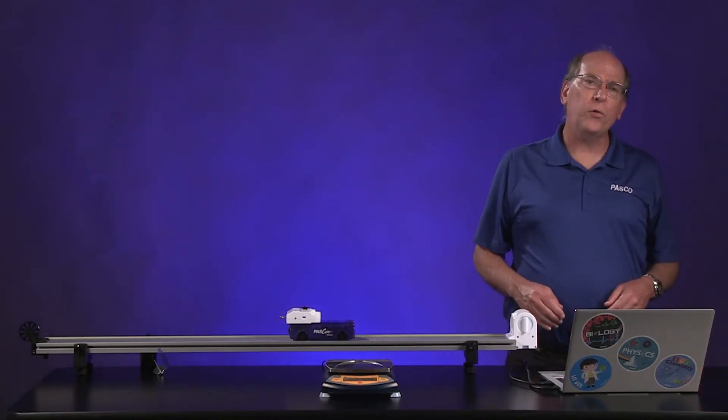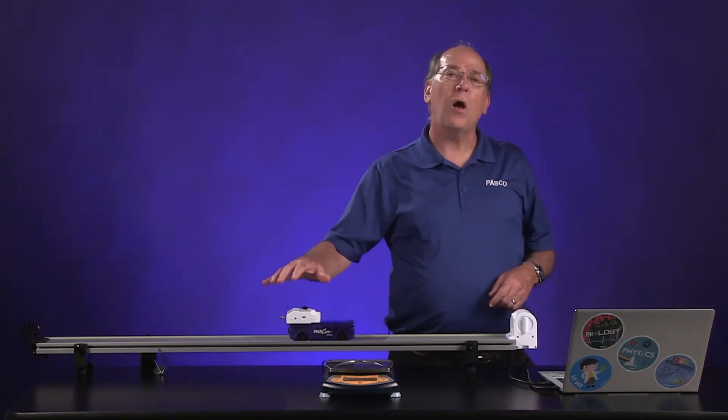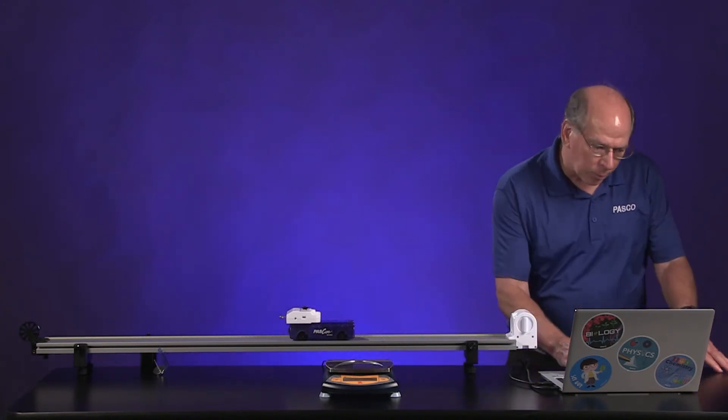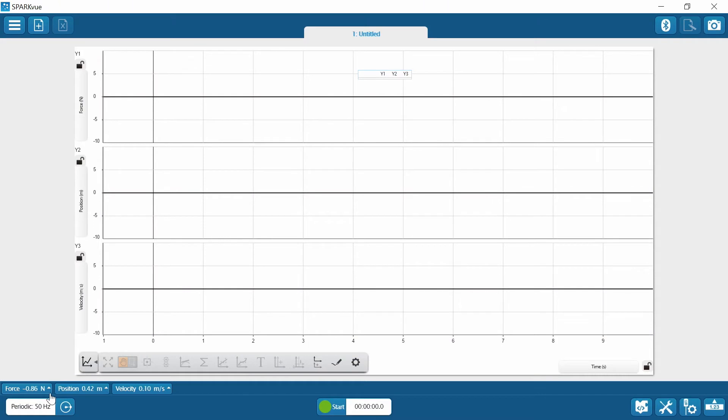We need to zero the force sensor when nothing is on it. So the string is off now to ensure an accurate measurement. So right now, the force sensor is reading negative 0.88. And I zero it, sometimes called taring, and we're all set then.